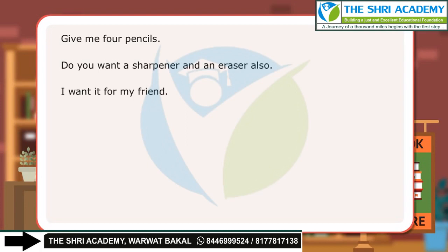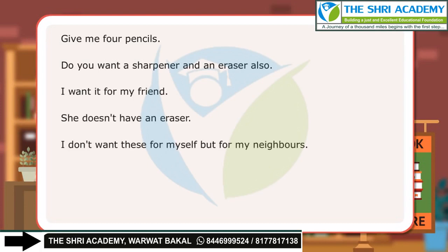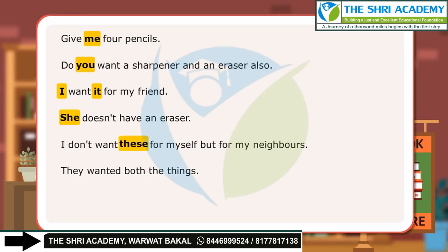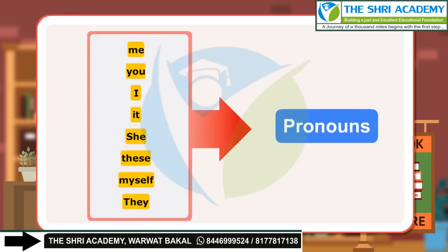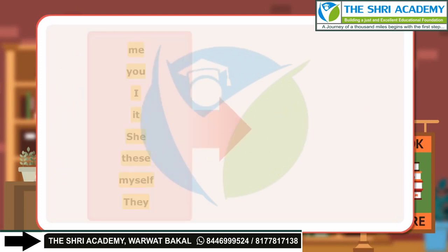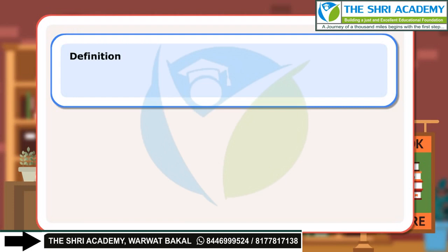In the dialogues, the girl and the shopkeeper have used several words in the place of nouns. The words me, you, it, I, she, these, myself, they are examples of pronouns. Definition: A pronoun is a word which is used in place of a noun.